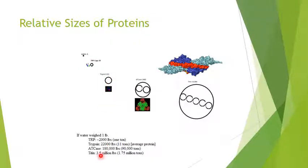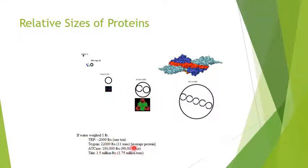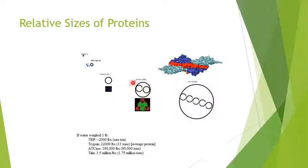The average protein like trypsin would weigh 11 tons — 22,000 pounds — compared to a water molecule. The protein I worked on for my PhD was called ATCase, and relatively that molecule would weigh 90 tons, or 180,000 pounds.